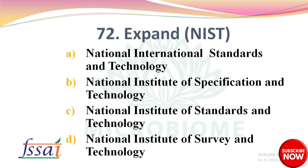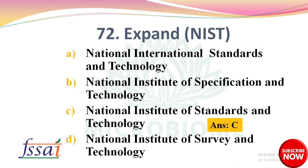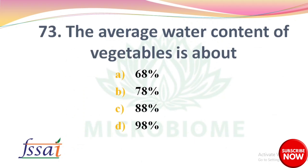What does NIST stand for? Options: A) National International Standards and Technology, B) National Institute of Standards and Technology, C) National Institute of Survey and Technology. The right answer is option C: National Institute of Standards and Technology. The average water content of vegetables is about? Options: A) 68%, B) 78%, C) 88%, D) 98%. The right answer is option C: 88%.